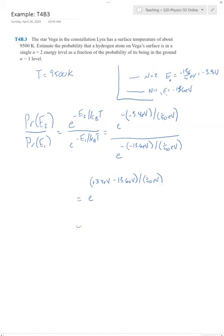So I'll go ahead and do that calculation. 3.4 minus 13.6 gives us a minus 10.2, so it's equal to E to the minus 10.2 divided by 1 over 40th. This is just E to the minus 10.2 times 40. If I just multiply this by 40, it's E to the minus 408. So it's really unlikely, even at this super high temperature, to be in level 2 versus level 1.